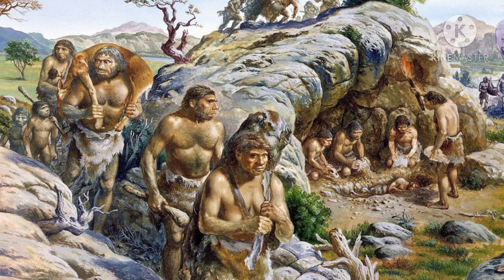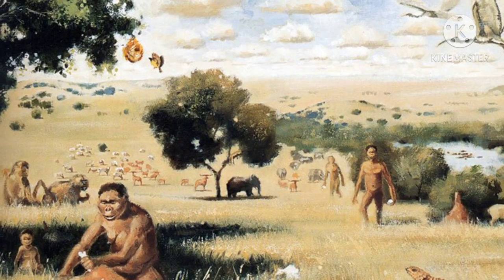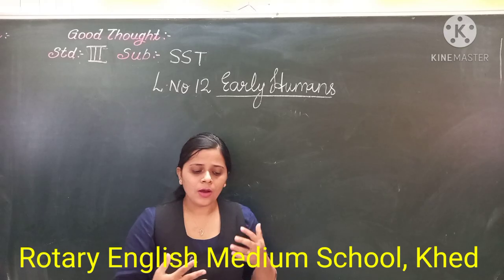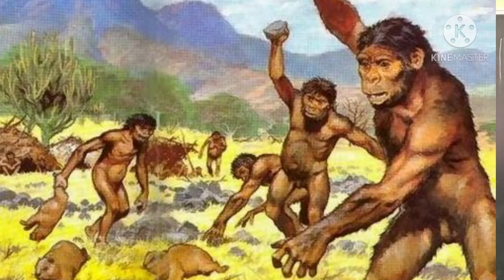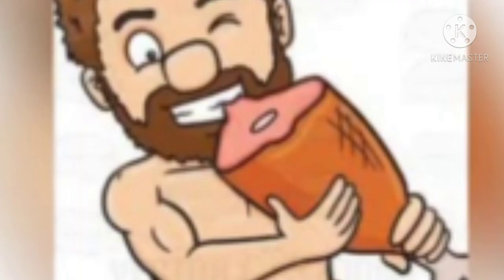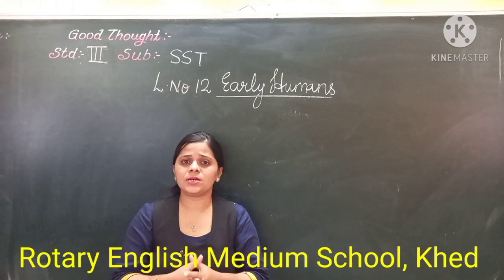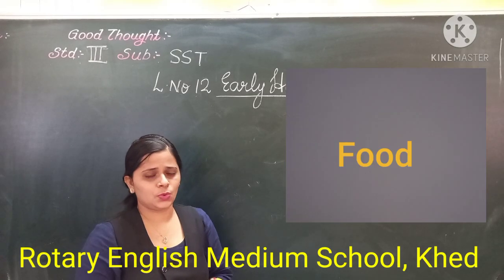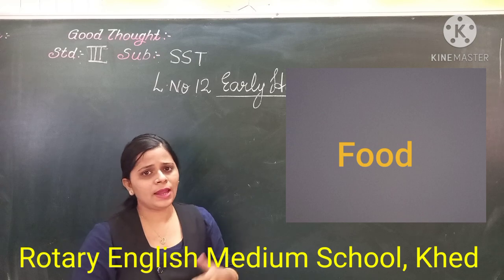We discussed that these early humans, they used to pluck the fruits and uproot the roots and eat them. And also sometimes they also kill the wild animals with the stone and eat their flesh without cooking. This all we have discussed in the last video — we discussed about their food.